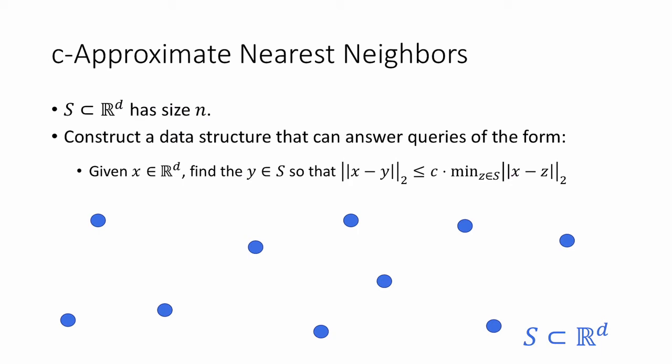This is called C approximate nearest neighbors. The problem is as follows. Once again, we have a set S of size n that lives in R to the d. And we want to construct a data structure that's not too big that can answer queries of the following form. Given some x in R to the d, we want to find any y in S, so that the L2 distance between x and y is no more than C times the smallest distance between x and any point in the set.